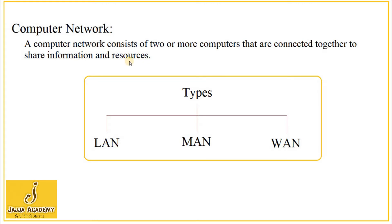Resources can be software resources or hardware resources. Today we shall discuss different types of computer network. Mainly, there are three categories: LAN, MAN, and WAN.